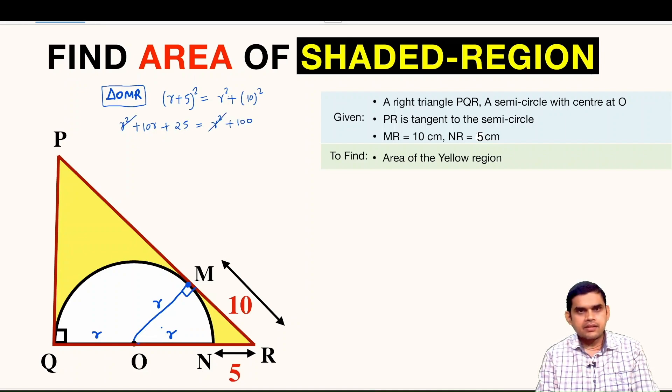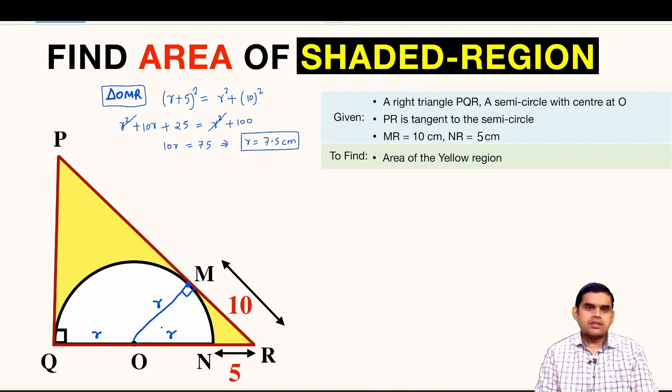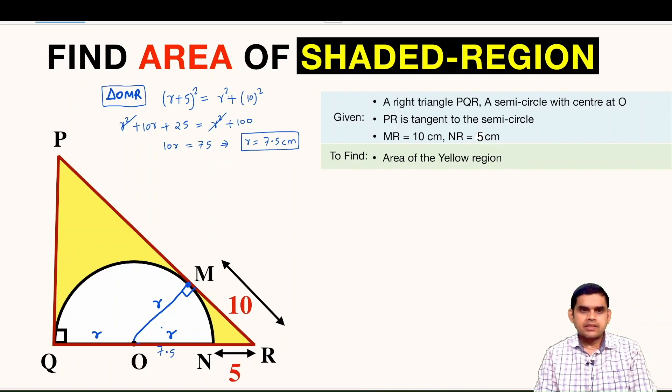And 10R will be, 25 goes on the other side, 100 minus 25 is 75. So from here R is 75 over 10, that is 7.5 centimeter. So the radius is known, this is 7.5, this is also 7.5.